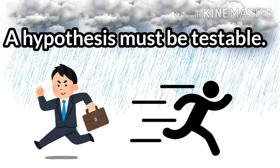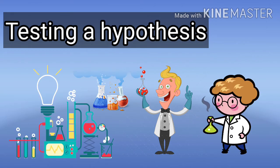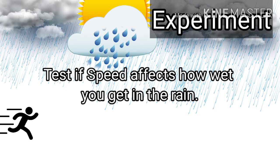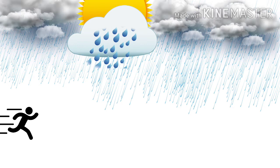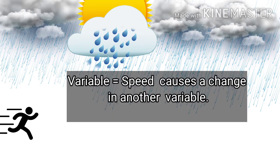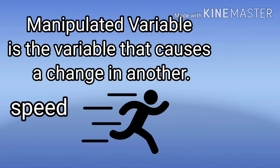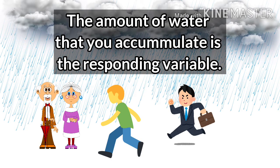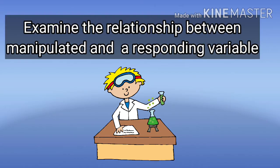The next step is testing a hypothesis. Scientists perform experiments to test their hypothesis. In an experiment, any factor that can change is called a variable. The variables in a rain experiment include your speed, your size, the rate of rainfall, and the amount of water that hits you. Your hypothesis states that one variable — speed — causes a change in another variable — the amount of water that hits you. The speed with which you walk or run is the manipulated variable, and the amount of water you accumulate is the responding variable.